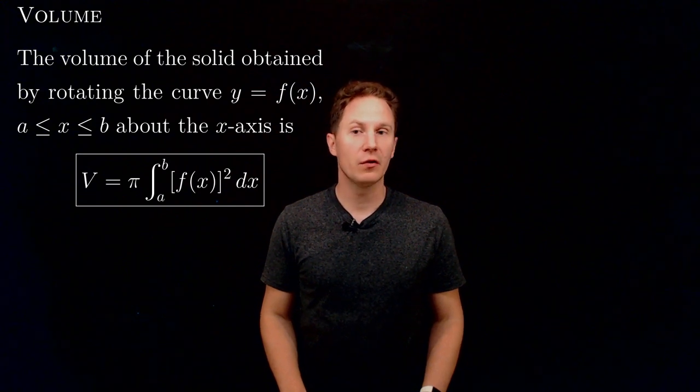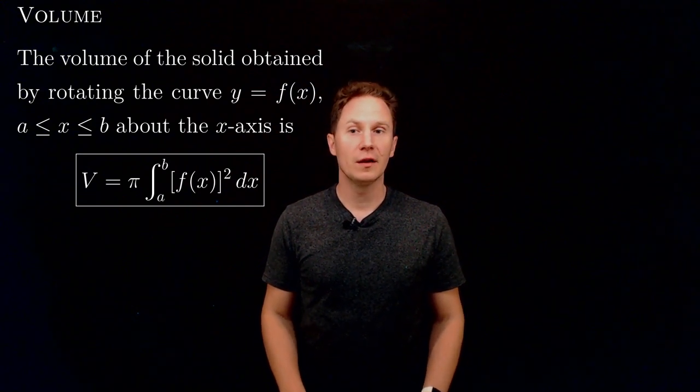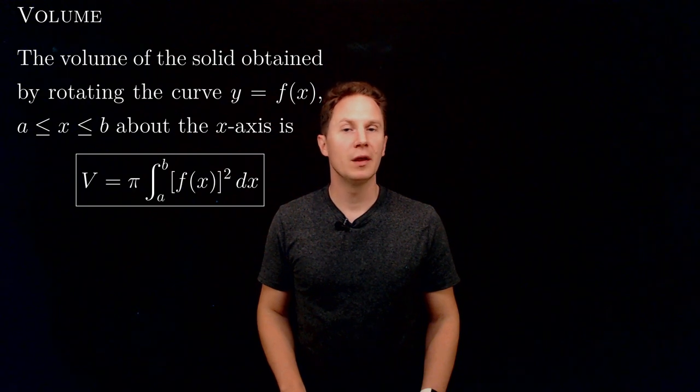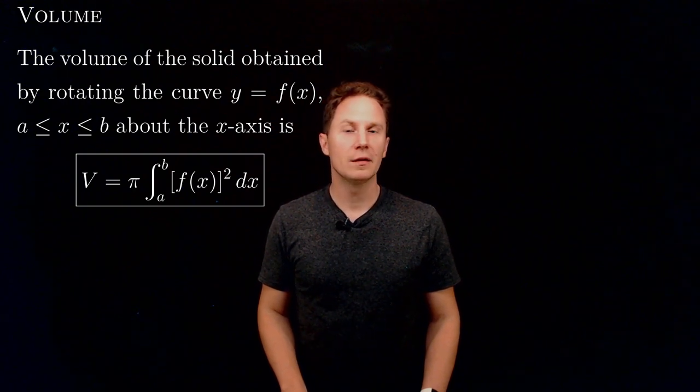About the x-axis. That way we get a solid whose volume is given by this formula: pi times the definite integral from a to b of f of x squared dx.